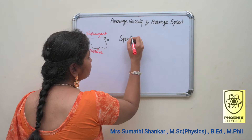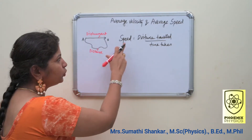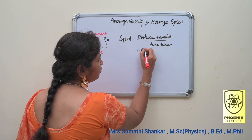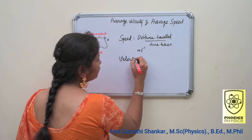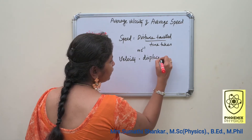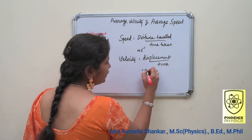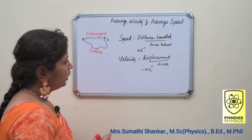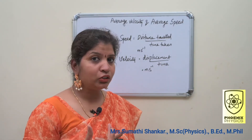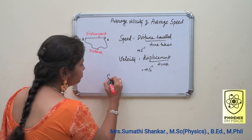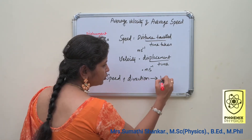Once you know distance and displacement, we can easily calculate speed and velocity. What is the formula for speed? Speed is equal to distance travelled divided by time taken. Speed is a scalar quantity and the unit is meter per second. Velocity is equal to displacement divided by time, also in meter per second. Velocity is a vector quantity, meaning it has magnitude and direction. Simply we can say speed plus direction gives velocity.